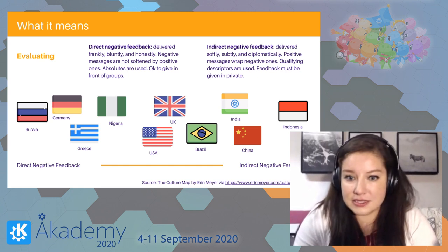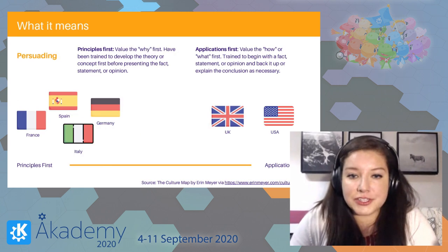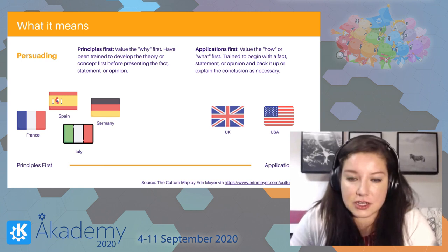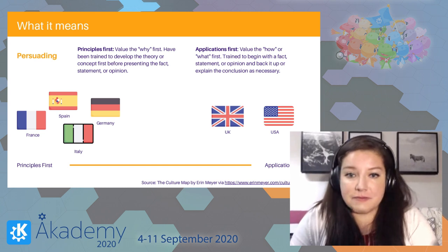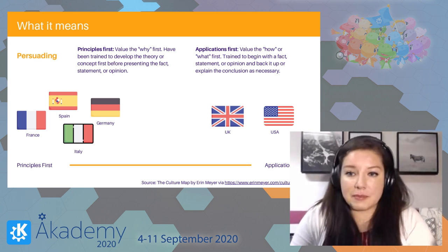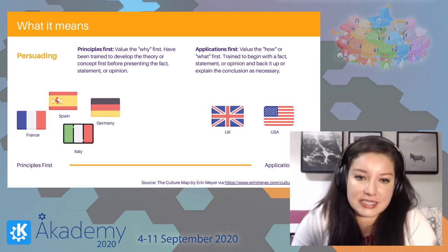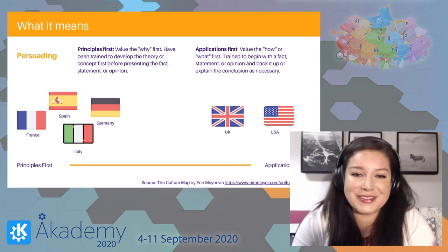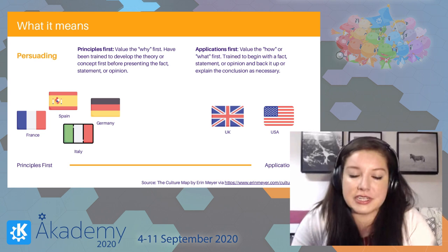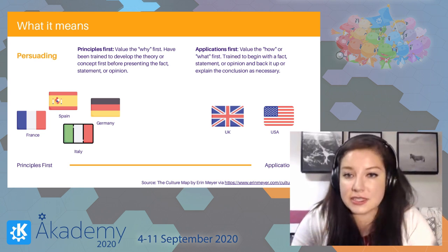The last indicator is persuading. Principles-first cultures value the 'why' before anything else — they develop the theory or concept first before presenting facts, statements, or opinions. Applications-first cultures value the 'how' or 'what' first — they begin with facts and statements and then back them up as necessary. Erin Meyer mentions that someone from France might get really frustrated working with a manager from the United States who is constantly asking them to do something and mentioning the how and what, but not really the why. I think this is a really interesting indicator to know about as we consider how we work with others.